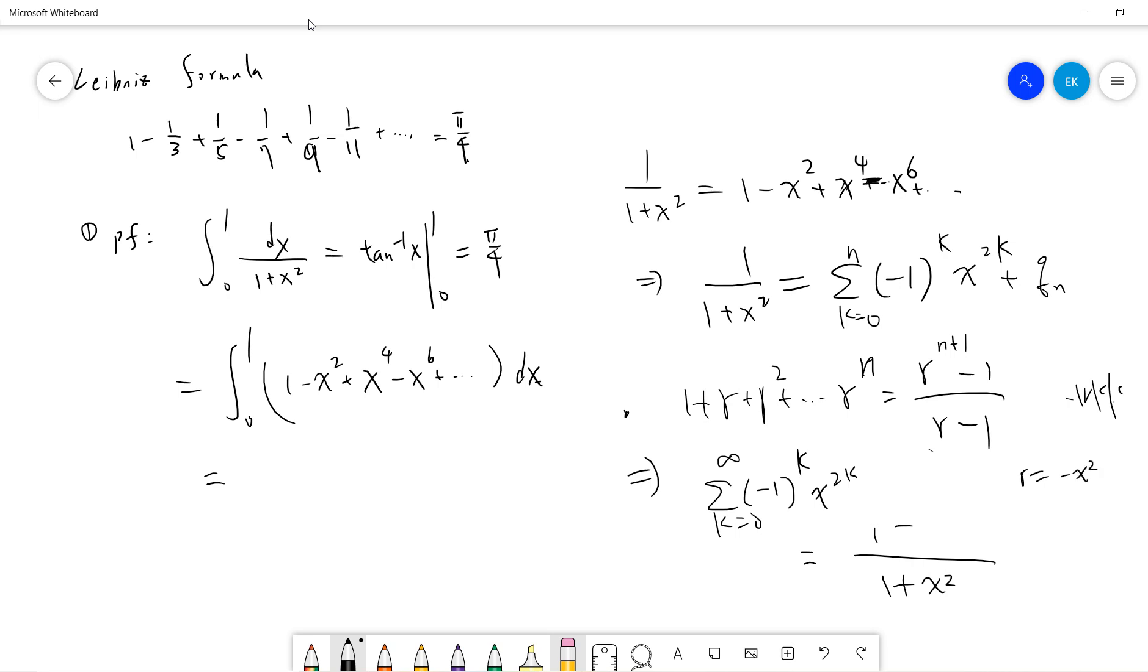So we get (-1)^(n+1) x^(2n+2). Using this formula, we can find qn. From here, we know what qn is.